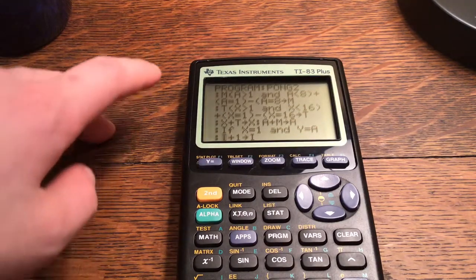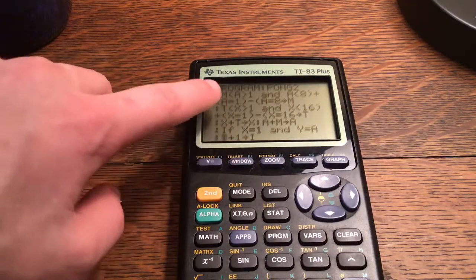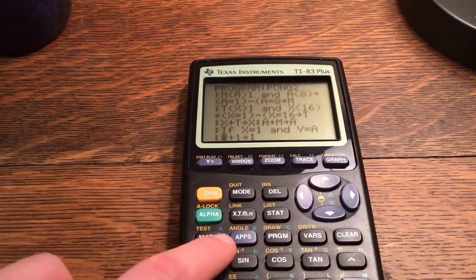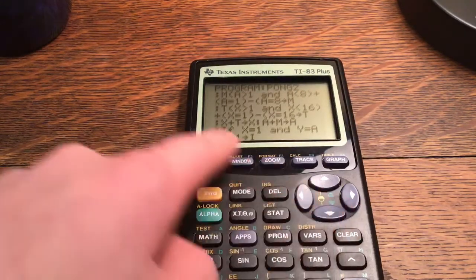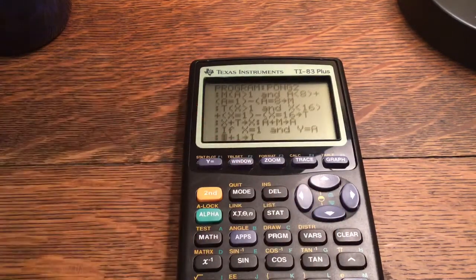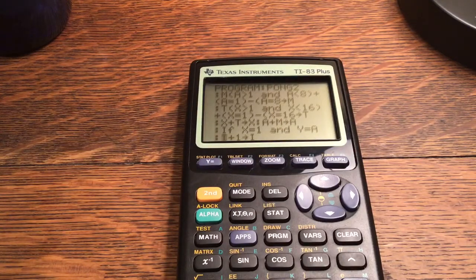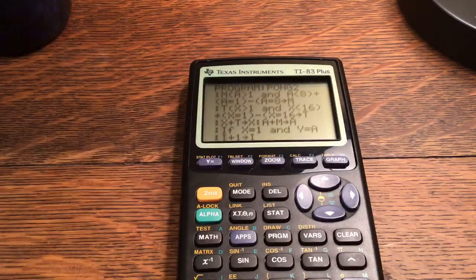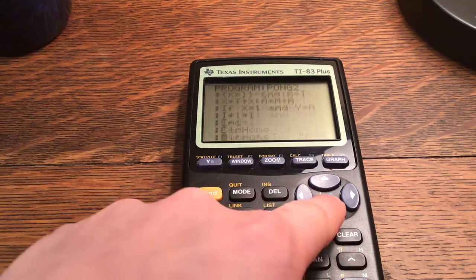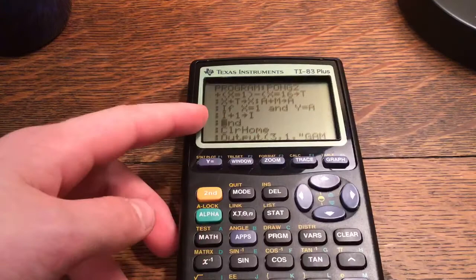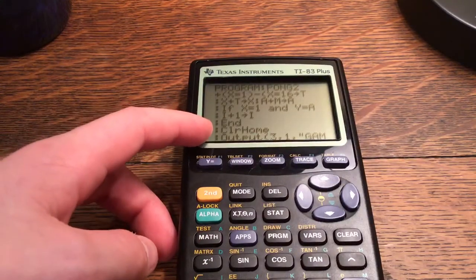The equal to, remember it's second math or test because you clicked the yellow key. Then this is the other score part. So if you don't want the score part of the program, you can just skip that part right there.